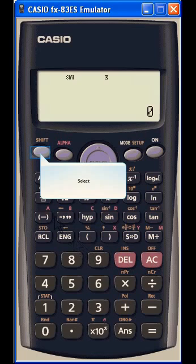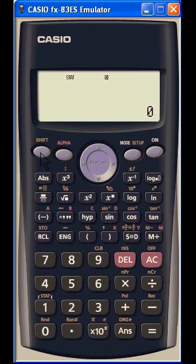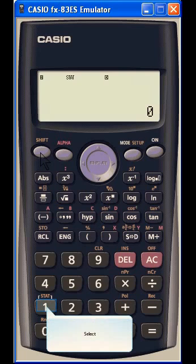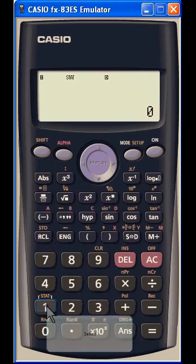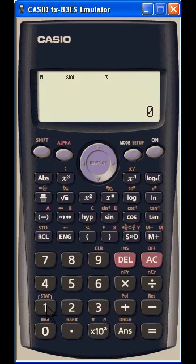We now want to display our statistical calculations. So we first press the shift button to give us the second function. We then press 1 which of course is the second function for the button 1 which is marked STAT in yellow over the button.